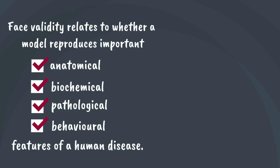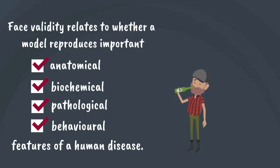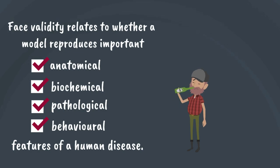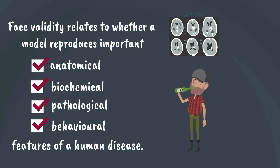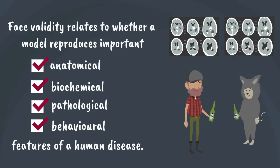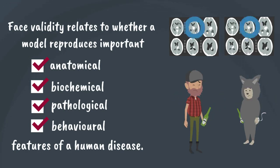For example, humans who are addicted to alcohol show compulsive self-administration and show altered activity and dopamine release in the reward-related brain area of the nucleus accumbens. An animal model of addiction with good face validity should also show these features.